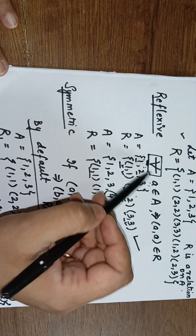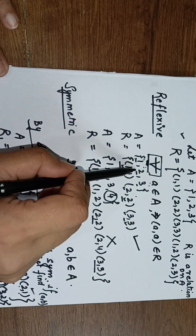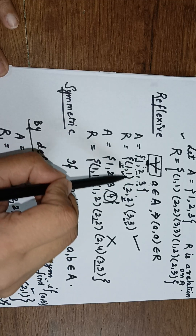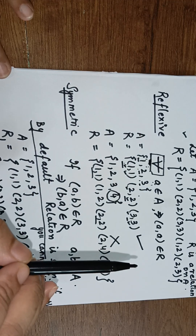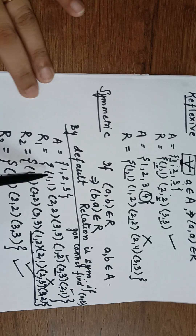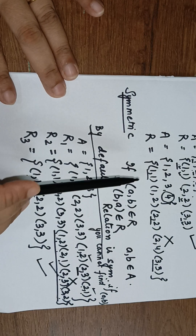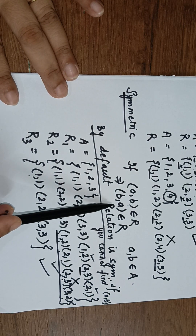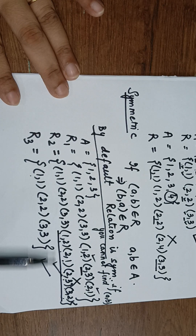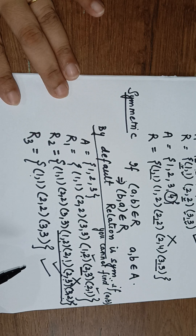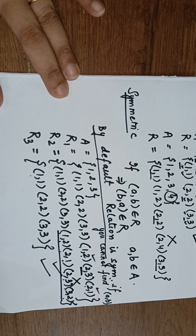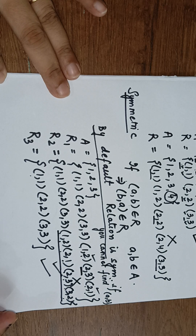Notice the difference: for reflexive, we used 'for all' — every element in the set must be related to itself. For symmetric, we use 'if' — only if (A,B) is present do we check for (B,A); otherwise by default it is symmetric. I hope that is clear; any doubts, please post in the chat.